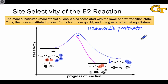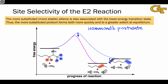Hammond's postulate is really a conjecture because, in theory, kinetics and thermodynamics are not theoretically related. However, Hammond's postulate notes that in a practical sense, a change in stability of a pair of products often leads to a change in kinetics consistent with that change in stability. In other words, the more stable product is formed more rapidly than the less stable product, and that is what we observe here.